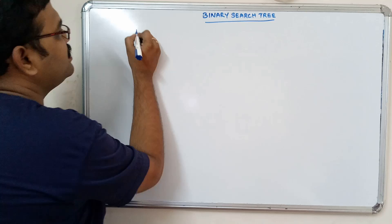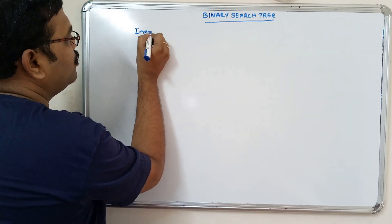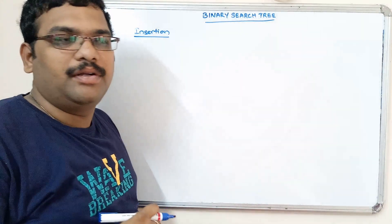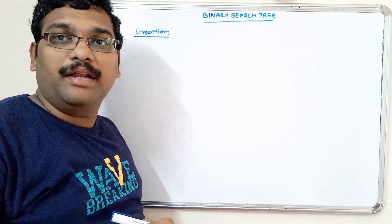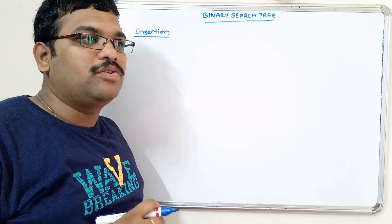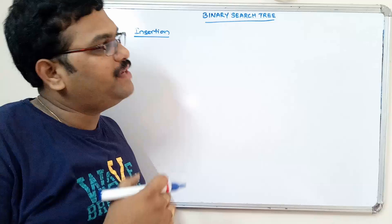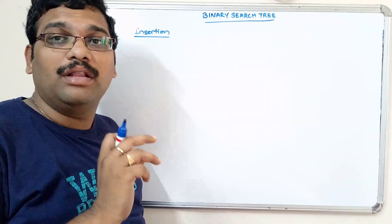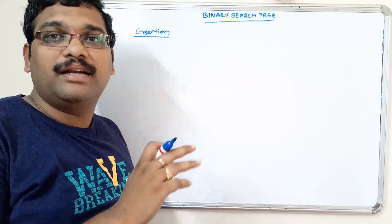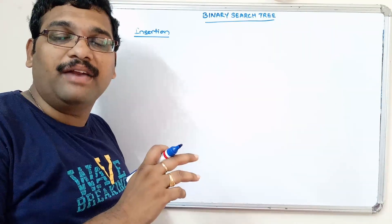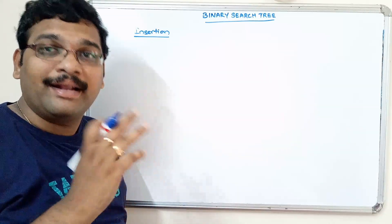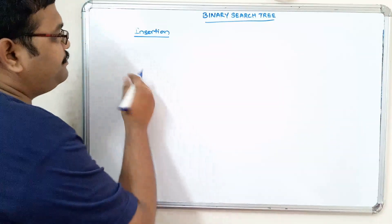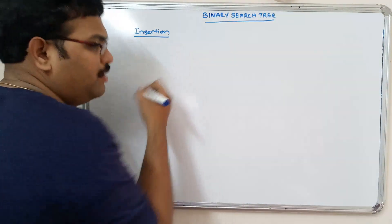So how to insert an element into the binary search tree. Based upon the root element we will go with the insertion. All the elements — first we have to set the root. All the elements which are less than the root will be inserted to the left subtree, and elements greater than the root are inserted to the right subtree. The same thing will follow.